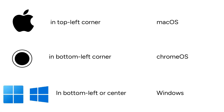Before we can install the Google Drive app on your computer, we need to identify what kind of computer you have. If you have the Apple logo in the top left corner of your screen, you are using Mac OS. If you have a circle in the bottom left corner, you're using Chrome OS. And if you have one of these two symbols in the bottom left or center of your screen, then you have Windows.